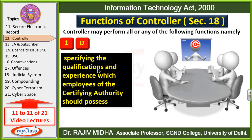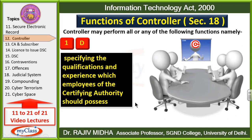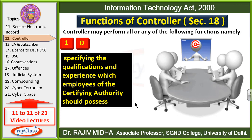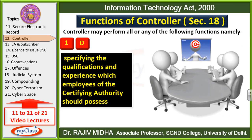D point: Specifying the qualification and experience which employees of certifying authorities should possess. Controller yeh bhi bataega ki certifying authorities ke jo employees hain, unki kya qualification aur experience honi chahiye. Is baat ki woh jaankari certifying authorities ko provide karega ki tum is tarah ki qualification ke logon ko aur is tarah ke experience ke logon ko hire kar sakte ho.